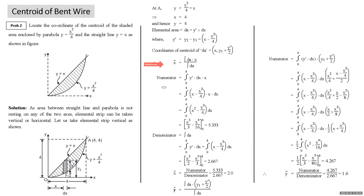For x̄: numerator = integral from 0 to 4 of y'·x dx = integral of (x − x²/4)·x dx = integral of (x² − x³/4) dx. Integrating: x³/3 − x⁴/16, evaluated from 0 to 4 gives 5.33. Denominator (total area) = integral from 0 to 4 of y' dx = integral of (x − x²/4) dx = x²/2 − x³/12, evaluated from 0 to 4 gives 2.667. Therefore x̄ = 5.33 / 2.667 = 2.